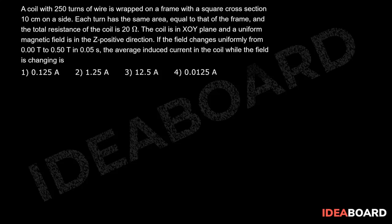The coil is in the XY plane and a uniform magnetic field is in the positive Z direction. If the field changes uniformly from 0.00 tesla to 0.5 tesla in 0.05 seconds, the average induced current in the coil while the field is changing is?